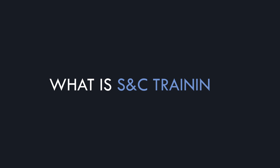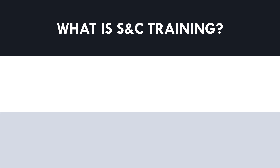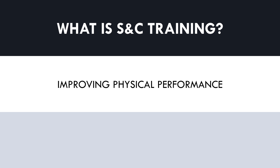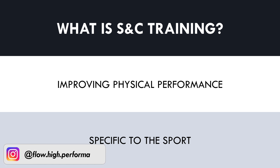Before creating a program, we first need to understand what exactly strength and conditioning training is. Essentially, strength and conditioning refers to training that has the goal of improving physical performance. This type of training focuses on athletes who want to perform better in their specific sport from a physical standpoint. Therefore, strength and conditioning may look different for different athletes, since the physical demands of each sport are not the same.